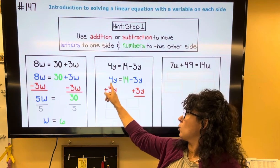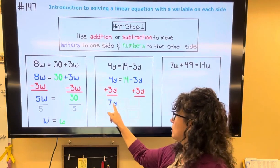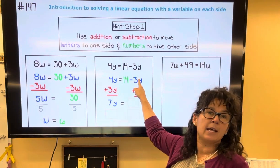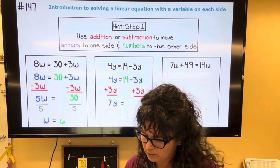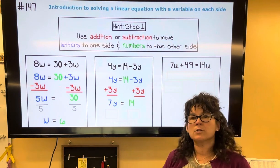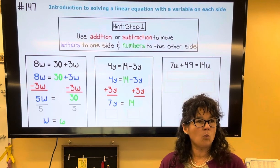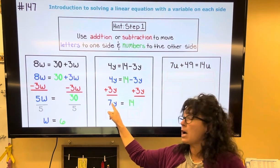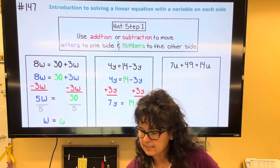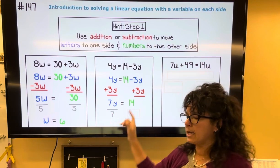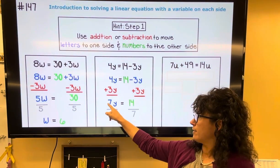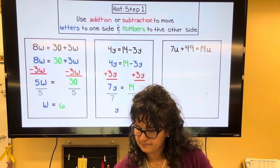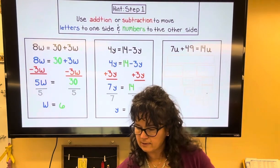Now let's simplify: 4y plus 3y gives us 7y. Bring down the equal sign. The 3y got rid of the negative 3y, so on the right side all I have left is 14. Now I'm asking myself: what is preventing y from being by itself? It's the number 7 — since they're side by side, that's multiplication. The opposite of multiplication is division, so to get rid of times 7, I divide by 7 on both sides. The 7 cancels, y is by itself, and 14 divided by 7 is 2.